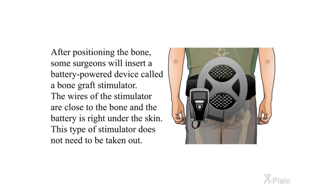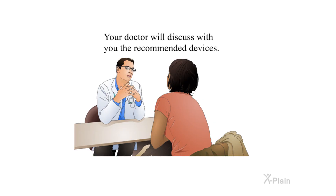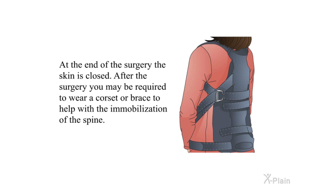After positioning the bone, some surgeons will insert a battery-powered device called a bone graft stimulator. The wires of the stimulator are close to the bone and the battery is right under the skin; this type of stimulator does not need to be taken out. Your doctor will discuss with you the recommended devices. At the end of the surgery the skin is closed; after the surgery you may be required to wear a corset or brace to help with the immobilization of the spine.